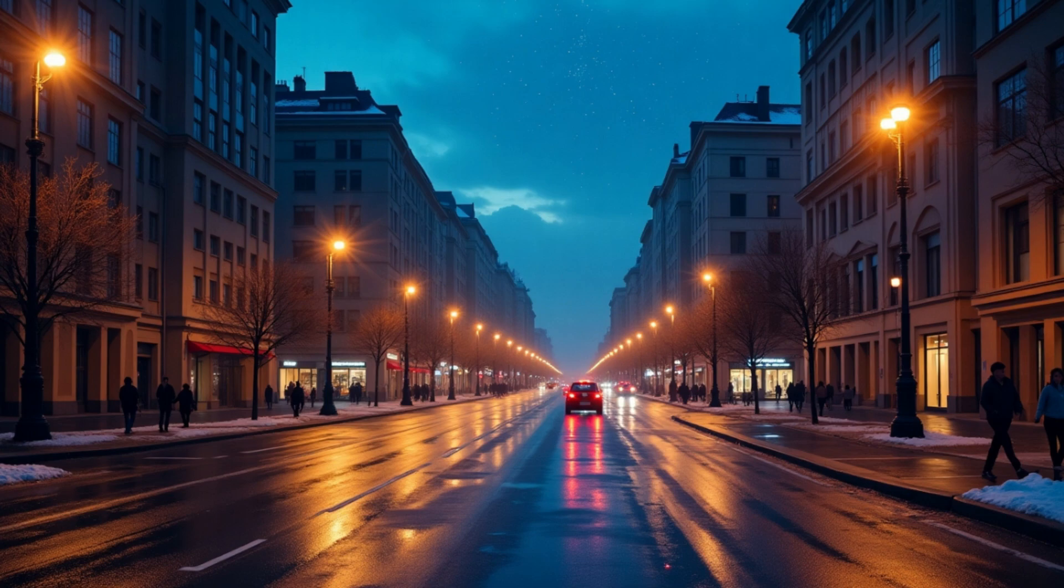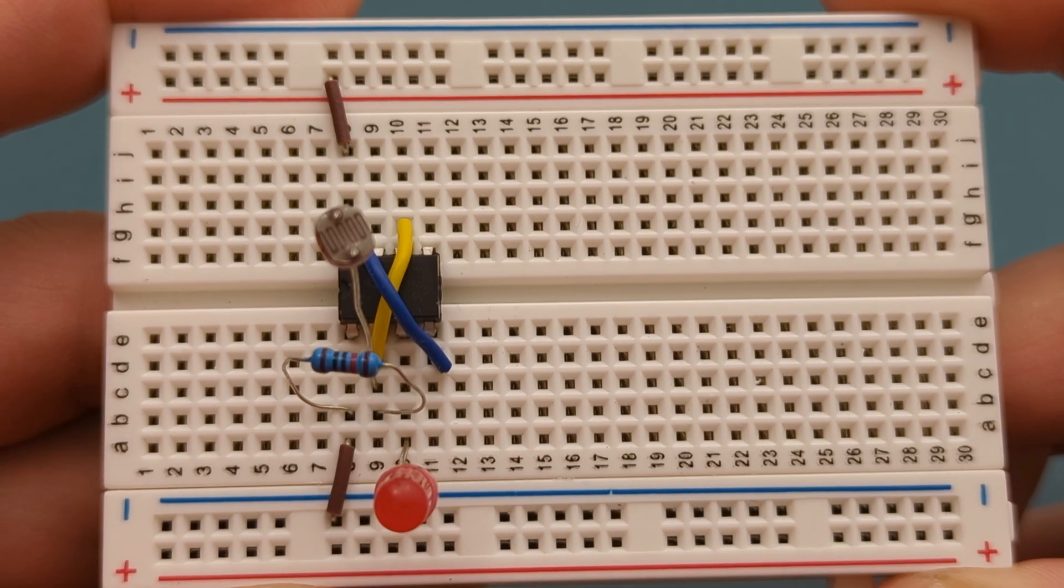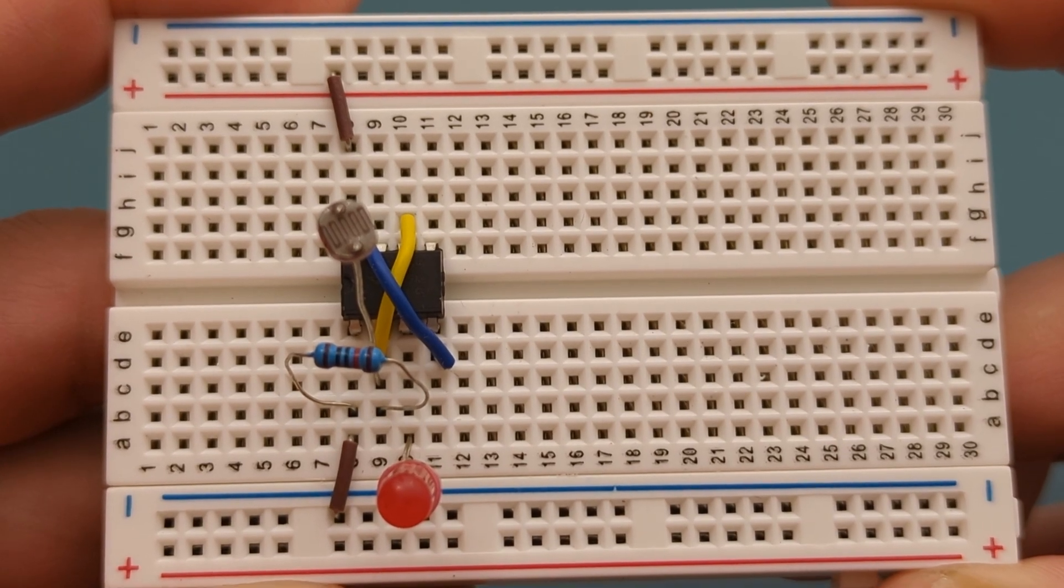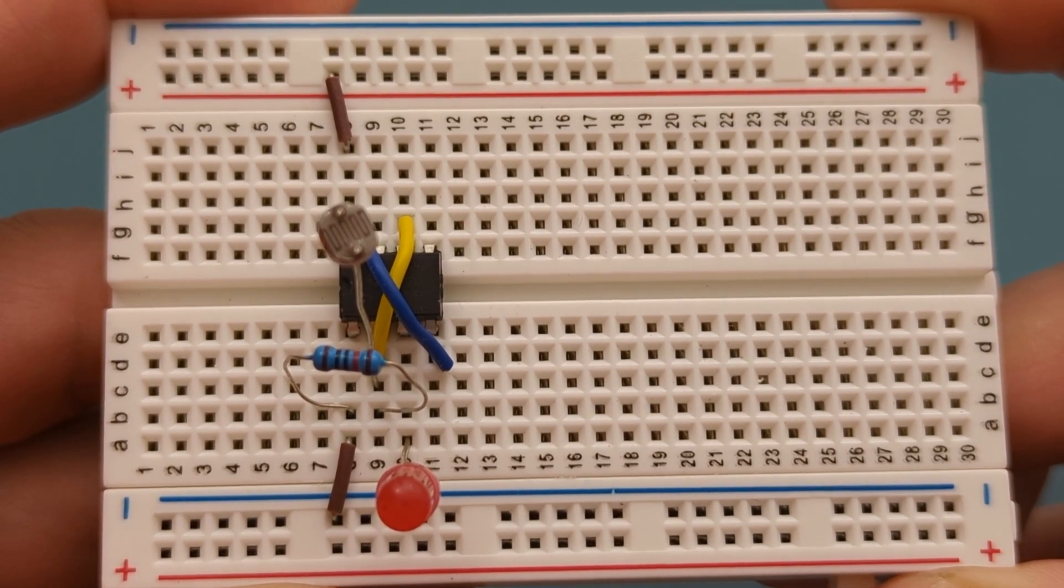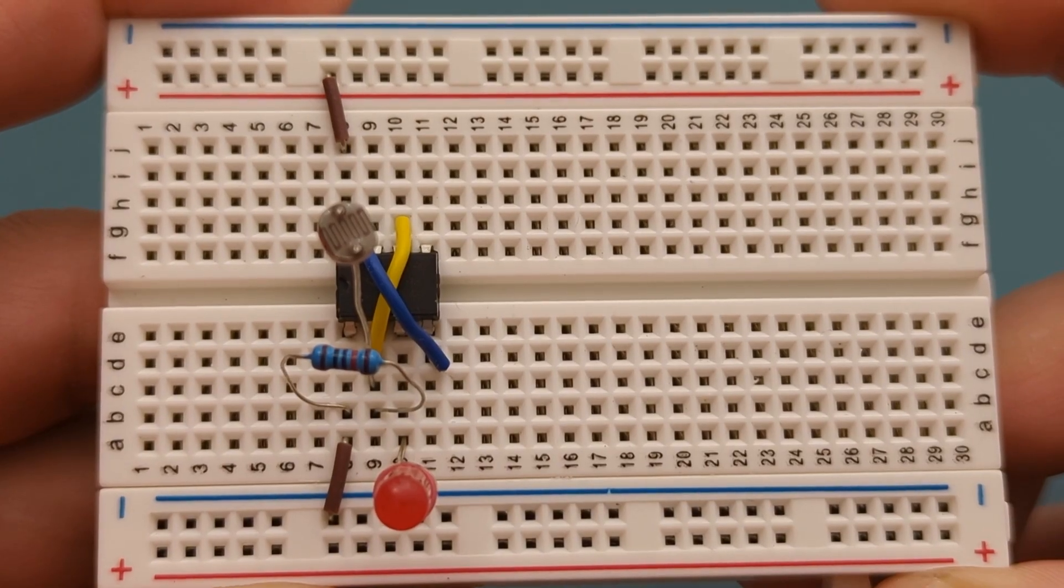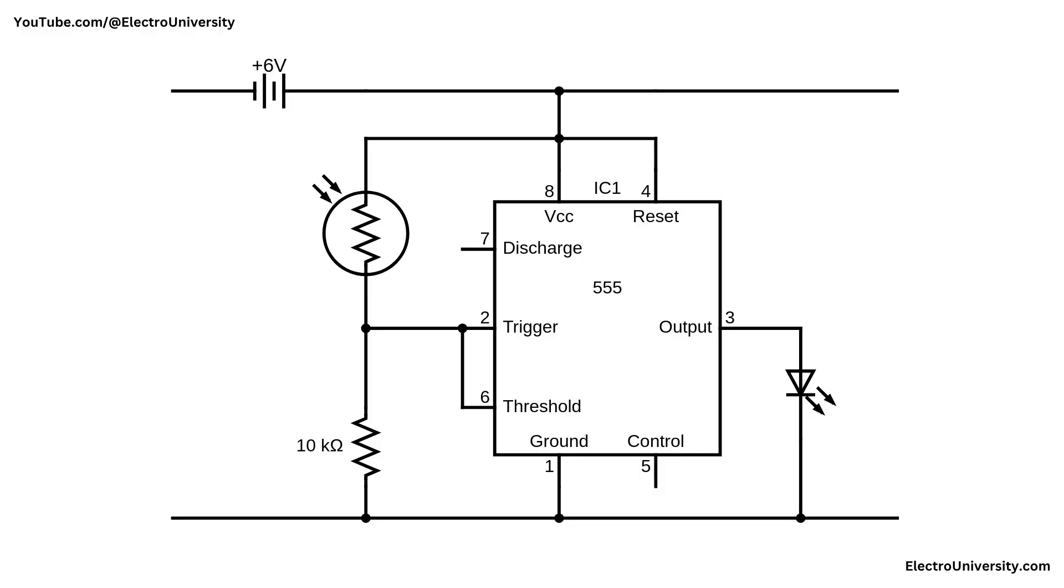Have you ever wondered what makes streetlights turn on at night and off during the day? Hey guys! In this video, I'll walk you through step-by-step how to build a streetlight circuit using a 555 timer IC. Stay tuned to the second part of this video, where I'll explain how this circuit works.